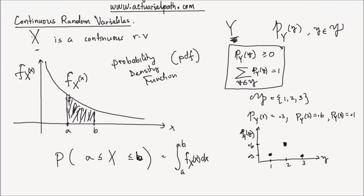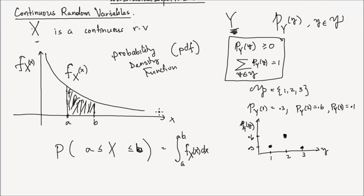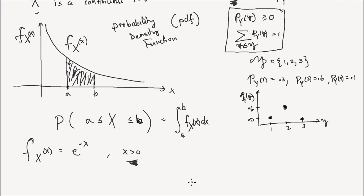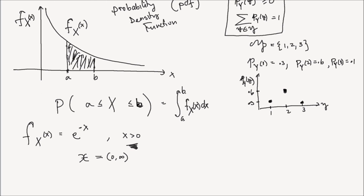An example of such a PDF is a random variable x described by the PDF e to the negative x, for values of x greater than 0. This function is only defined for values of x greater than 0. So the support of this random variable x, which I'm going to denote by script x, is the interval between 0 and infinity.